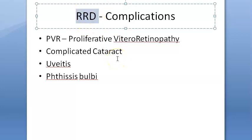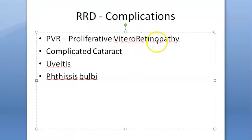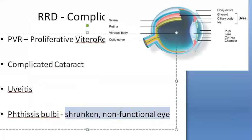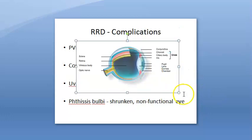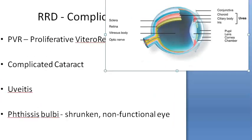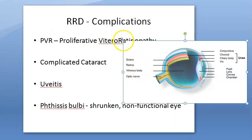Now the main content of this video: complications of regmatogenous retinal detachment. In long-standing cases, complications include proliferative vitrioretinopathy, complicated cataract, uveitis (inflammation of the uvea — choroid, ciliary body, and iris), and phthisis bulbi, which is a shrunken or non-functional eye. These are the complications of RRD.